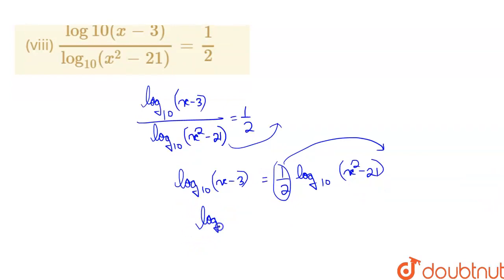Log base 10 of x minus 3 equals log base 10 of x squared minus 21 to the power 1 by 2. We can write it like this.